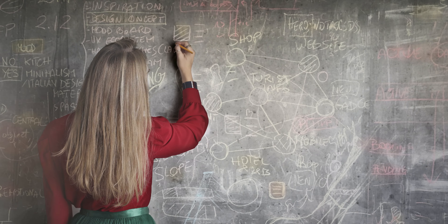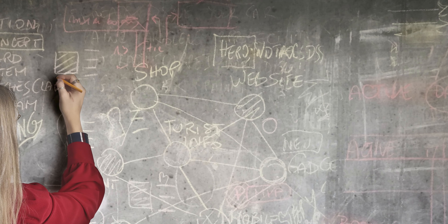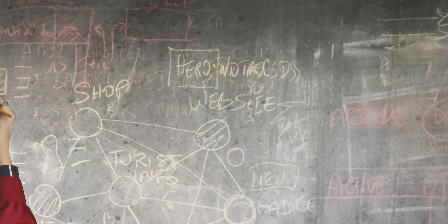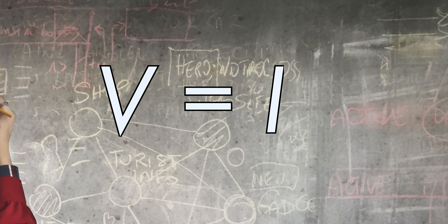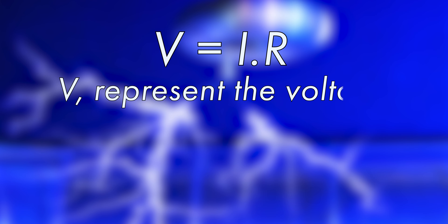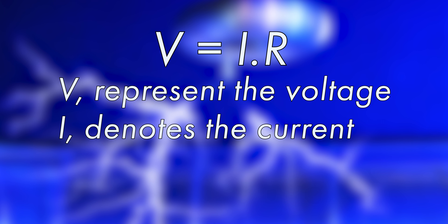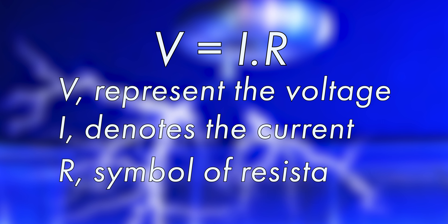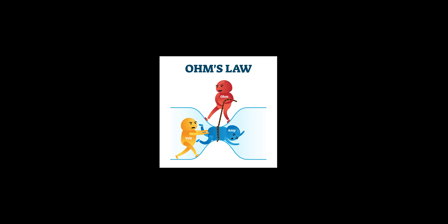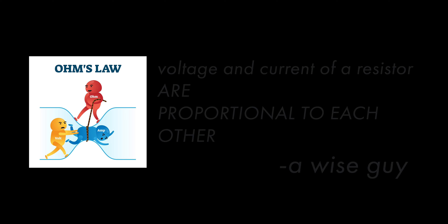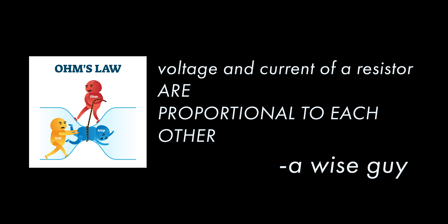Ohm's Law is encapsulated by a concise equation: V equals I times R. V represents voltage, I denotes current, and R signifies resistance. Ohm's Law tells us that the voltage across a resistor is equal to the current flowing through it multiplied by the resistance it presents.